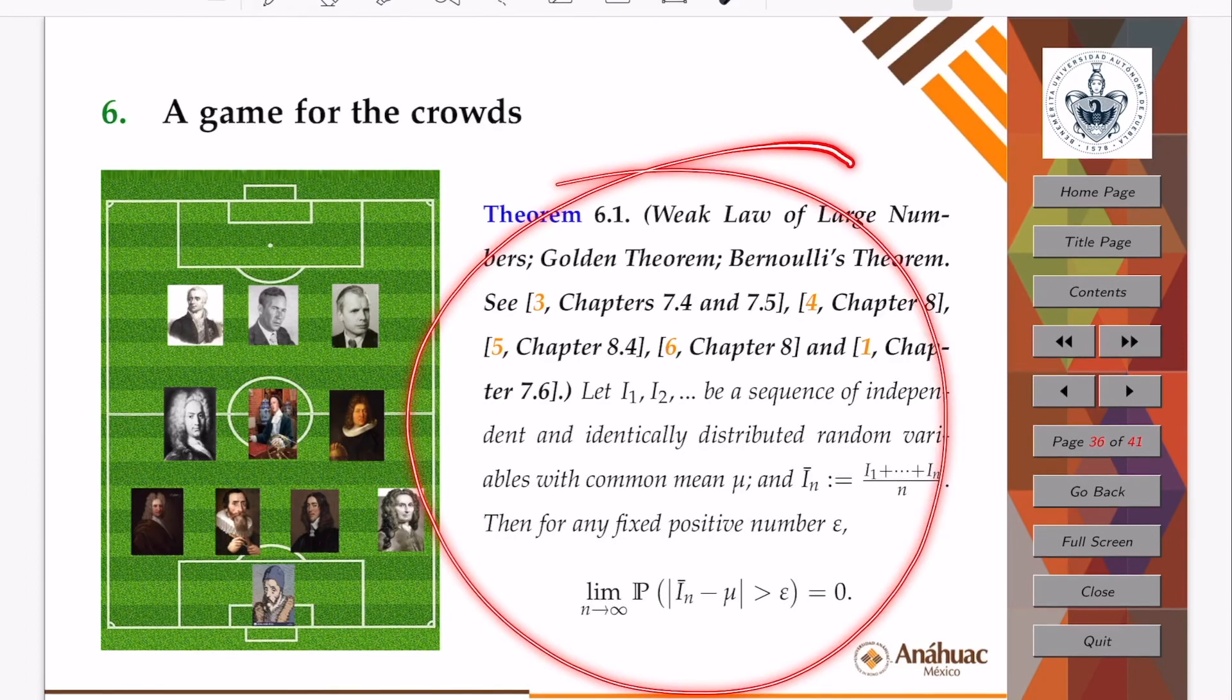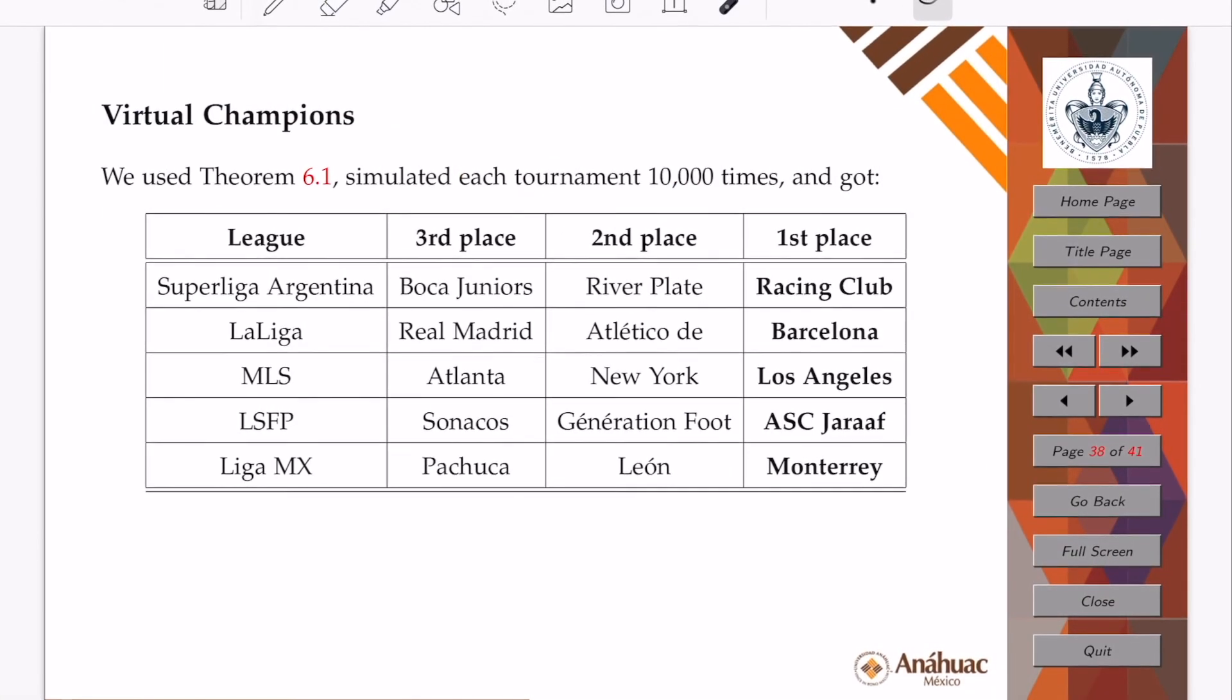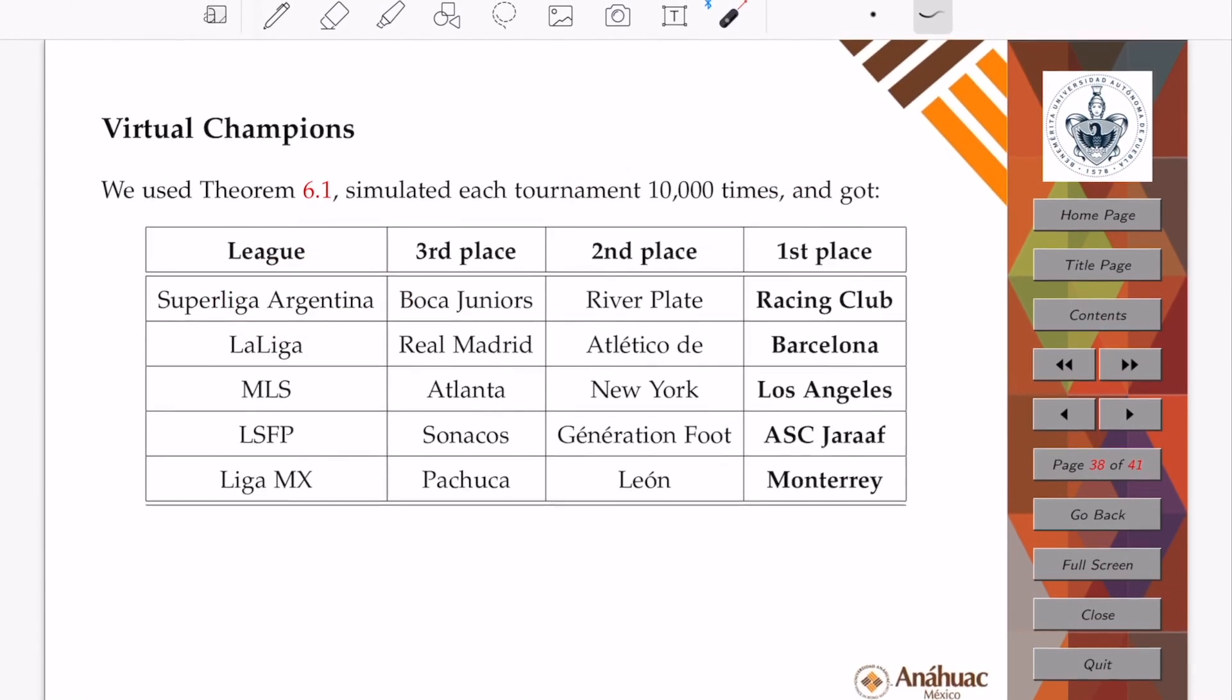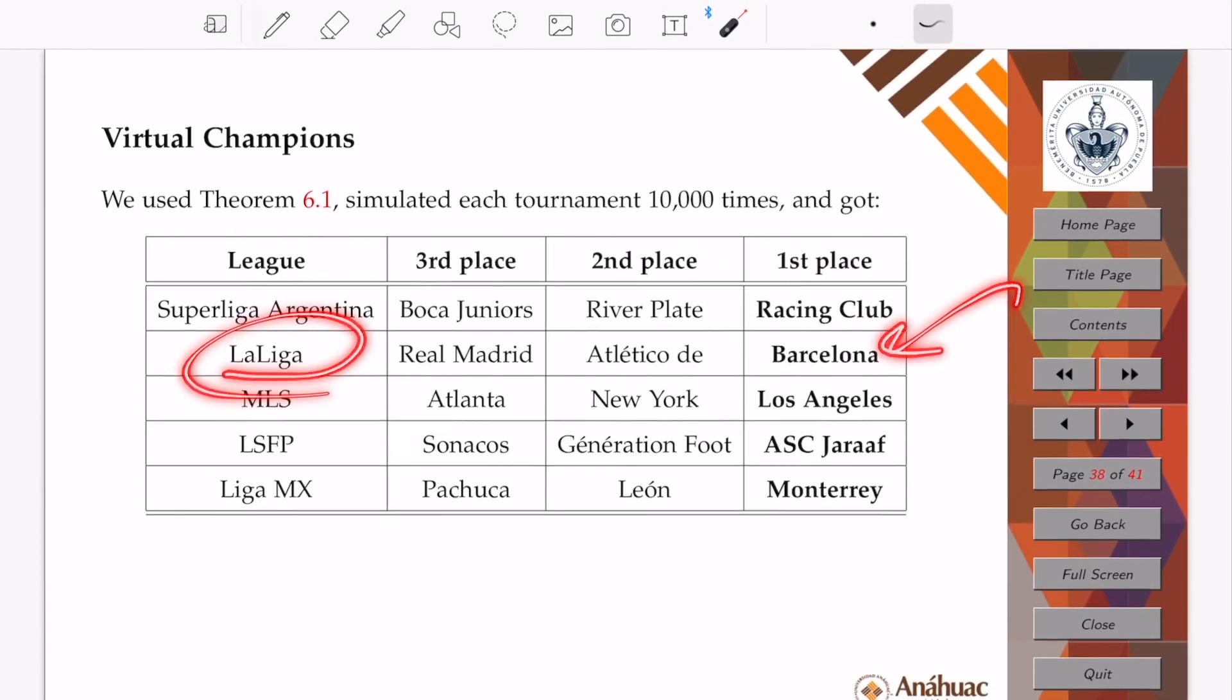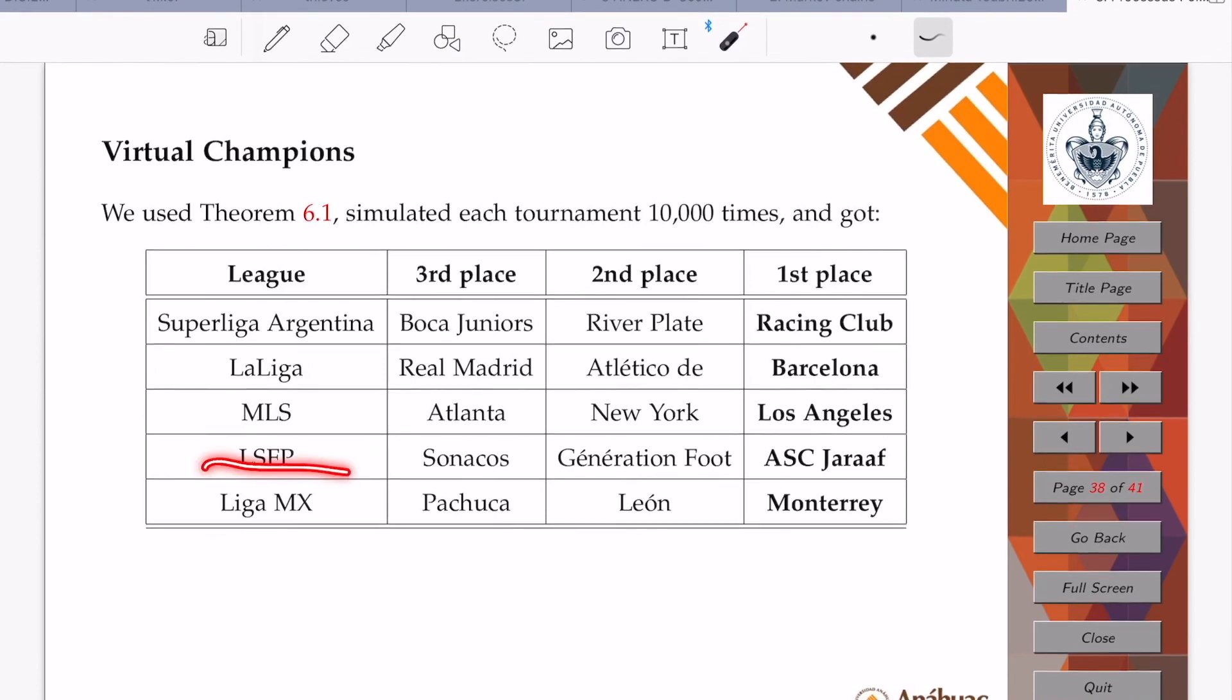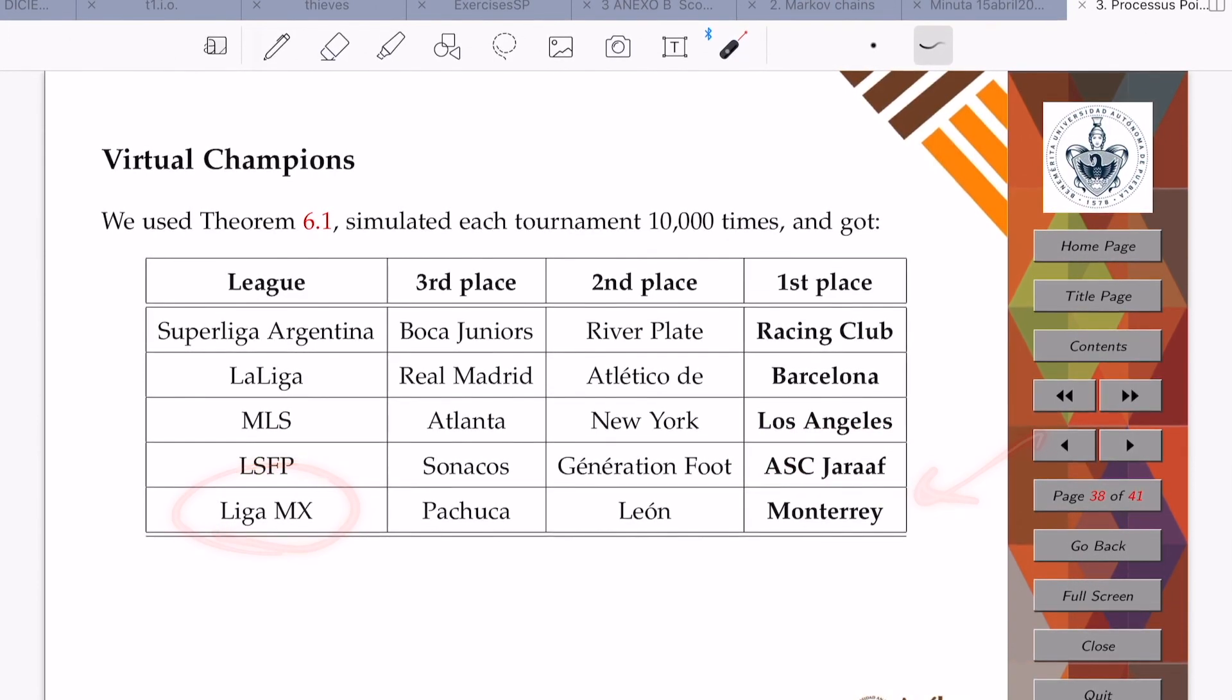If we use this result to simulate each tournament 10,000 times, then we would get that Argentina would have as champions the Racing Club, that Spain would have as champions Barcelona, that the United States would see Los Angeles crowning themselves, that Senegal would see the ASC Giraffe becoming champions, and that in Mexico, Monterrey would be champions.